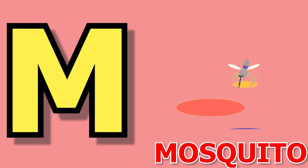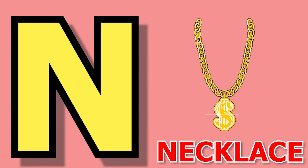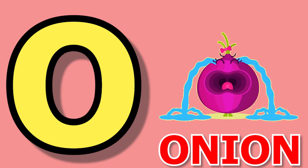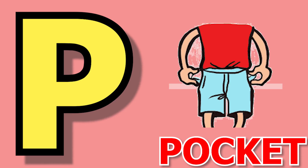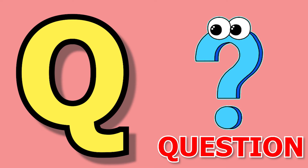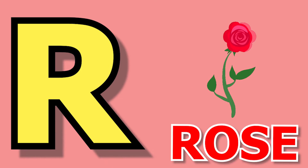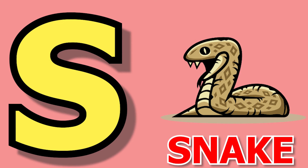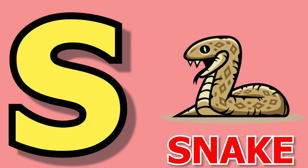M for mosquito, N for necklace, O for onion, E for pocket, Q for queen, R for rose.